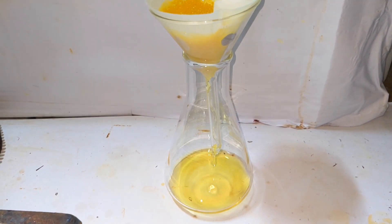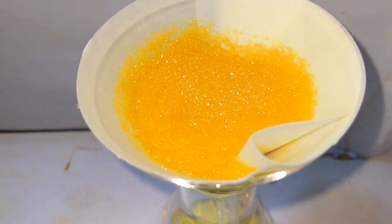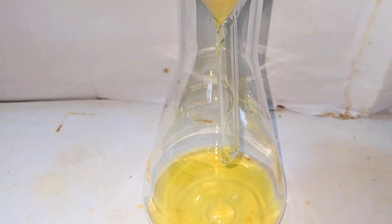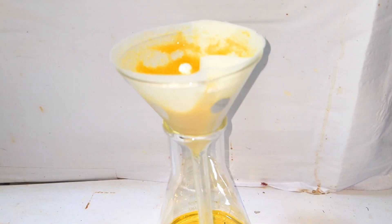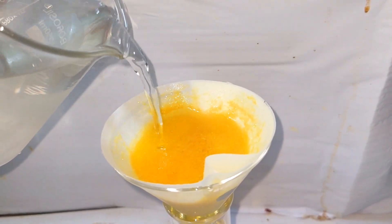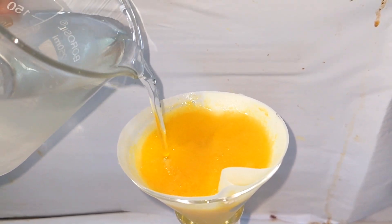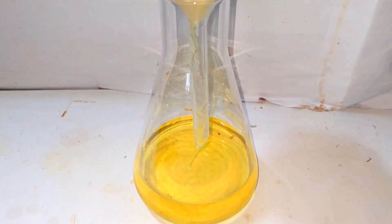Now we can filter out the solution. I am using a simple gravity filtration and that would be sufficient in this case. The filtrate which is a yellow colored solution can be discarded. The filtered product was then washed a couple of times with some ice cold distilled water and then it was allowed to dry.